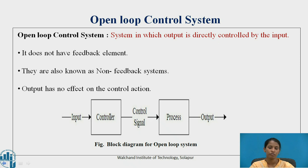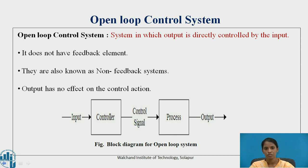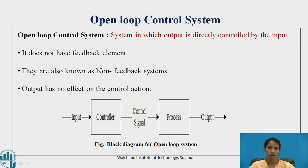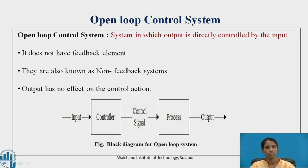Let's see the block diagram for the open loop system. The input of the system is given to the controller, which produces a control signal that is passed to the process or system. Within this process there may be internal disturbances — originating within the process — and external disturbances such as noise or environmental factors. The resulting output is known as the controlled output.